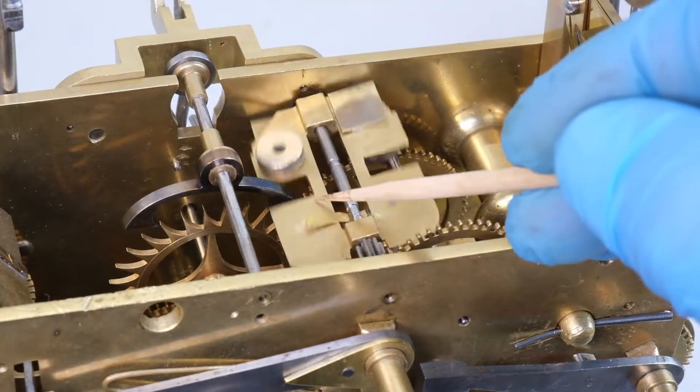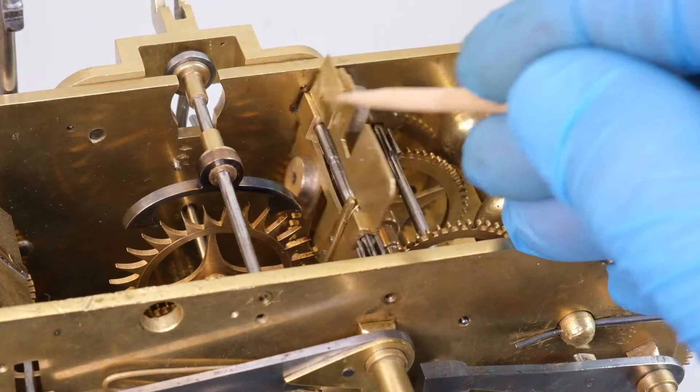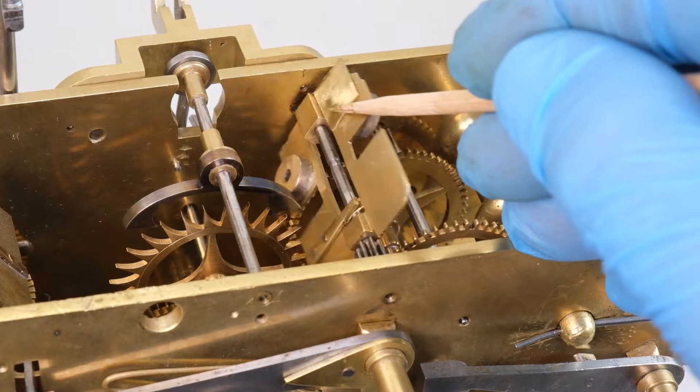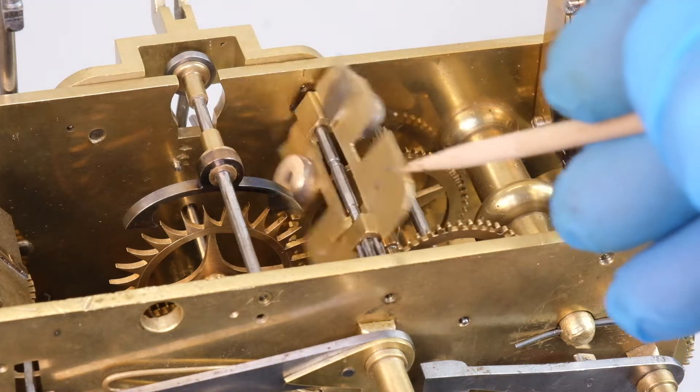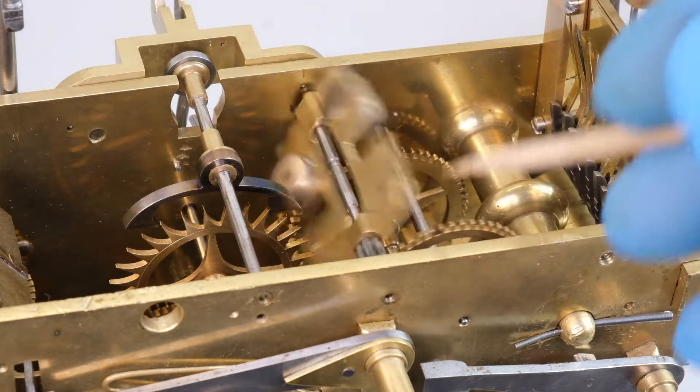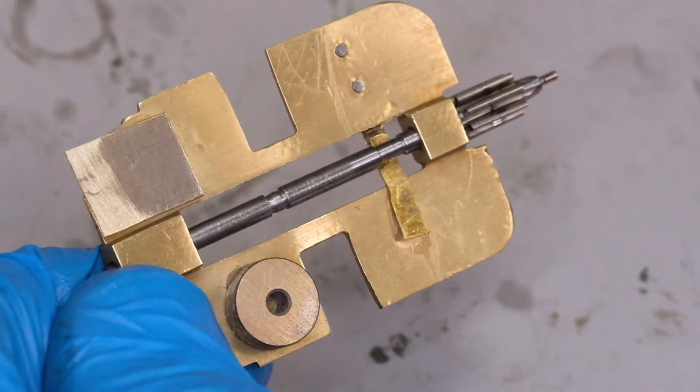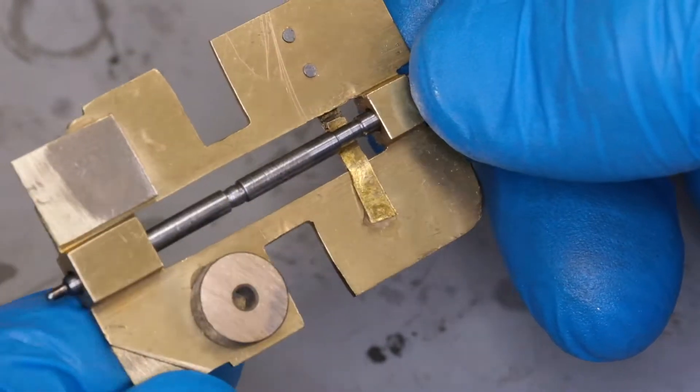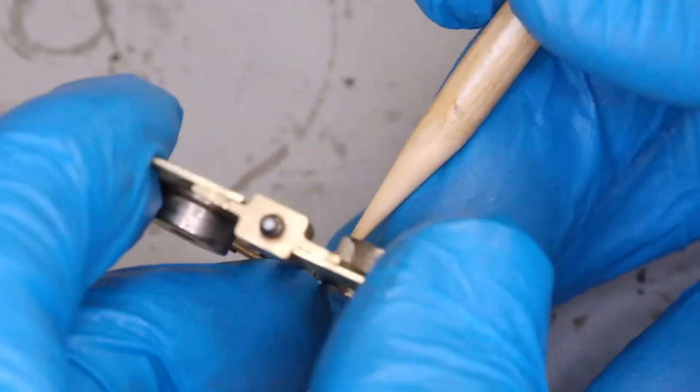Welcome back to part three of our third reed repair videos, where we are undertaking a wider project on this 18th century three-train fusee driven clock. If you watched the introduction, you'll have heard me talking about this component, which is an air brake. In clocks it's called the fly or a governor.